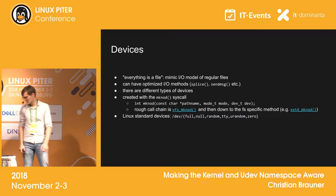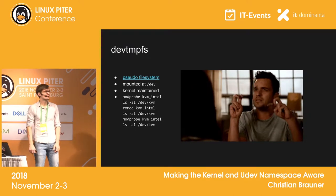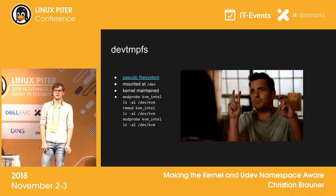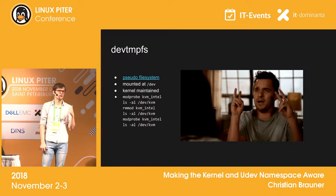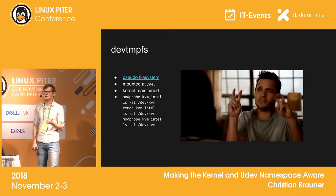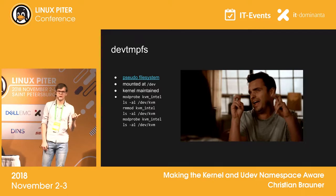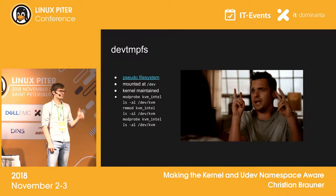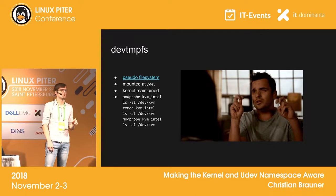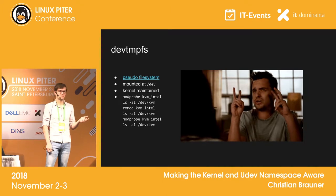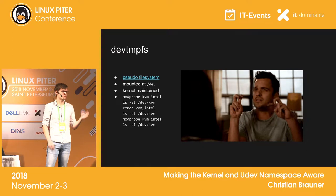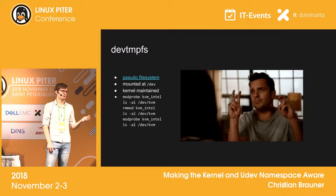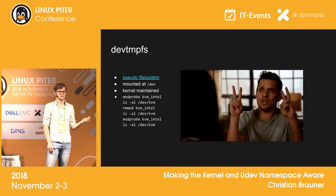I should explain the difference between a block device and a character device, since that's what we'll concentrate on for device namespaces. A block device allows you to write blocks of data, independent of alignment. Character devices usually provide raw device access — it depends on your driver and the actual device what alignment is required, how many bytes you can write, and so on. DMA, direct memory access, is usually done through character devices.